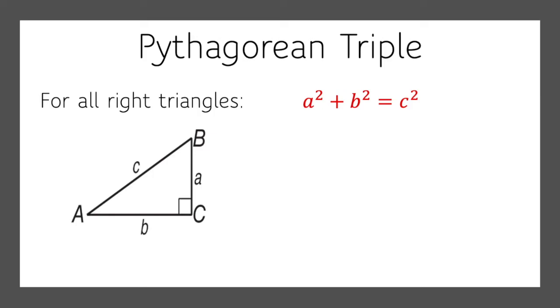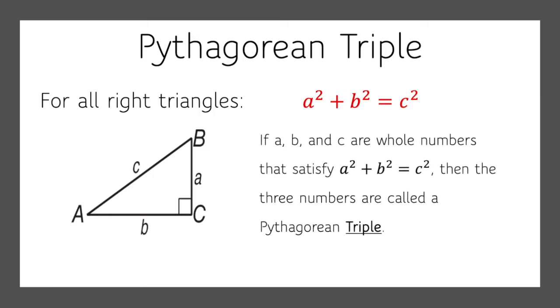A Pythagorean triple is a special kind of deal. If a, b, and c are whole numbers that satisfy a squared plus b squared equals c squared, then the three numbers are called a Pythagorean triple, like 3, 4, and 5, because 3 squared plus 4 squared equals 5 squared. So let's do some examples.